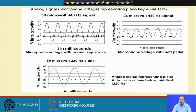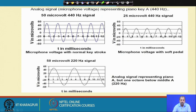On the other hand, if you use a microphone with soft pedal, it is a 25-microvolt signal at the same 440 Hz frequency — a 25-microvolt peak, 440 Hz signal. Or you can have piano A one octave below middle A, which is about 220 Hz, with a peak value of 50 microvolts and frequency of 220 Hz.